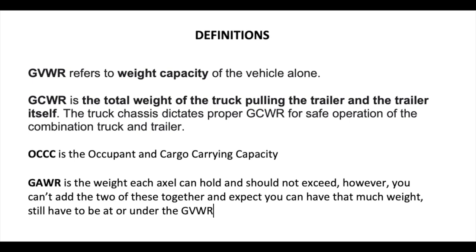The OCCC, which is the one that most people are interested in, is the occupant and cargo carrying capacity. Basically, that's what you're adding to your motorhome or trailer after you purchase it. Most of them now include where you don't have to add a full tank of gas or the propane. So this would be everything else — people, water, and stuff that you put inside your motorhome or travel trailer. The GAWR you will see on the stickers too — do not get this confused thinking you can add that up and have a great new total to play with. This is just per axle.